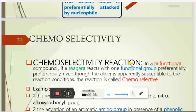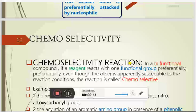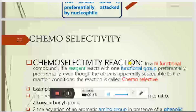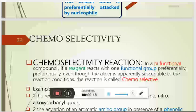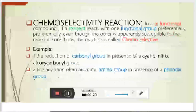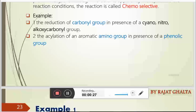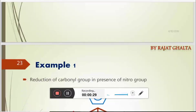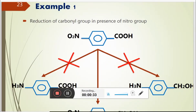What is chemoselectivity? Chemoselectivity means that if you have a bifunctional compound — a compound where there are two or more functional groups available — and the reaction is preferentially taking place over one functional group rather than the other, we say the reaction is showing chemoselectivity.